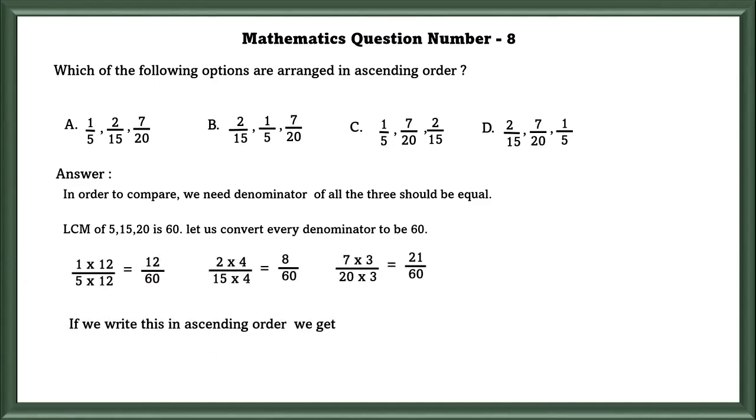After we converted, we got 12 by 60, 8 by 60 and 21 by 60. If we write this in ascending order, we get 8 by 60 and then 12 by 60 and then 21 by 60. Which leads us to the B option. We can see this in a figure form.